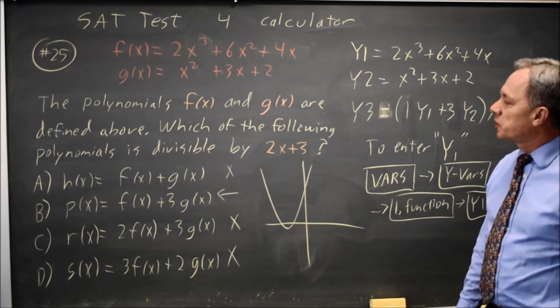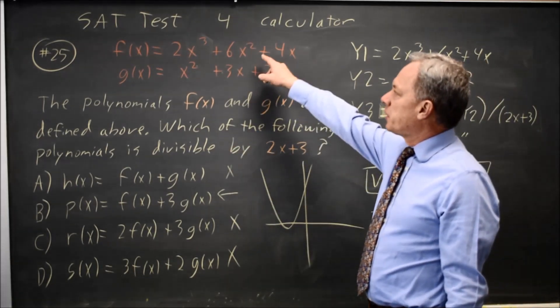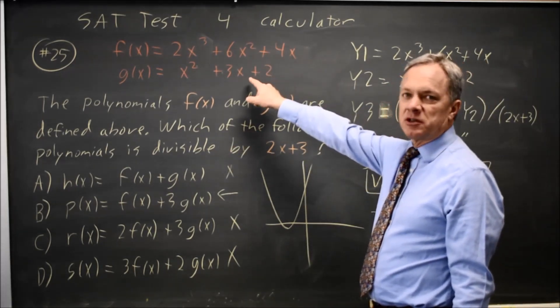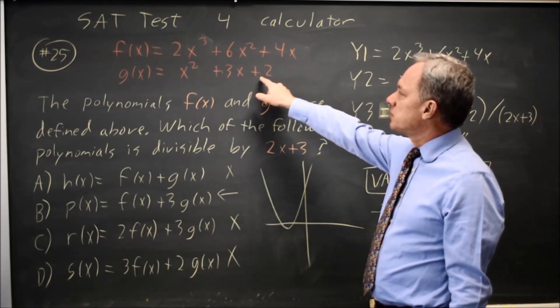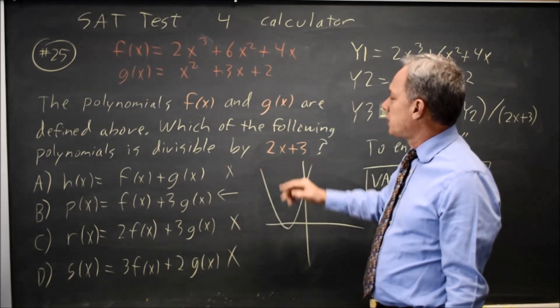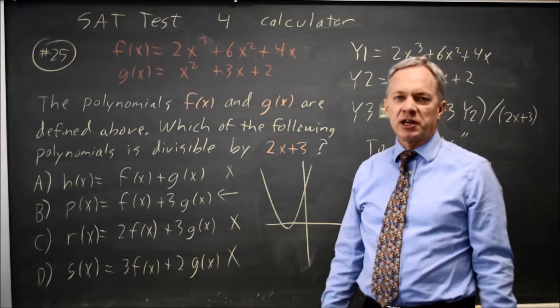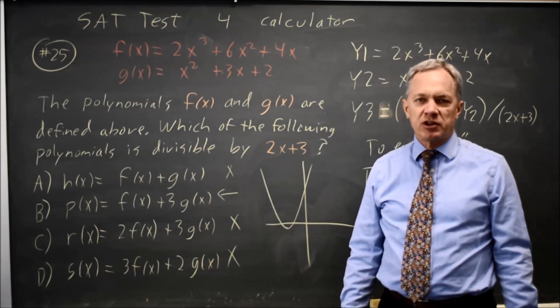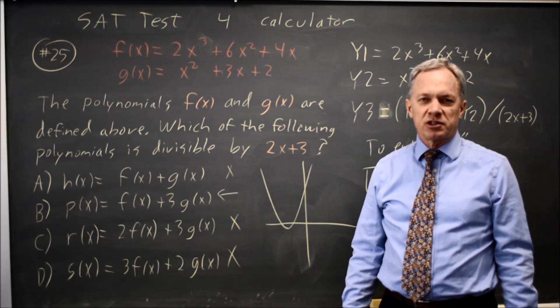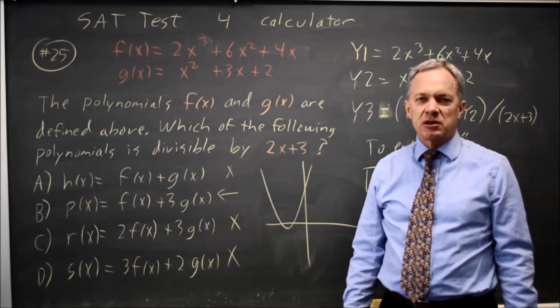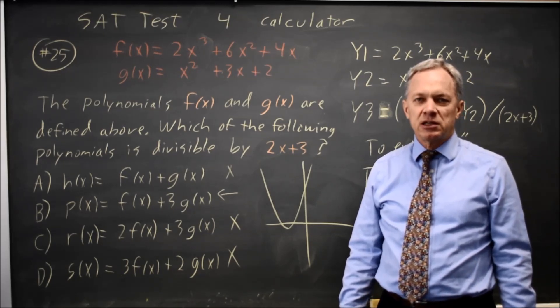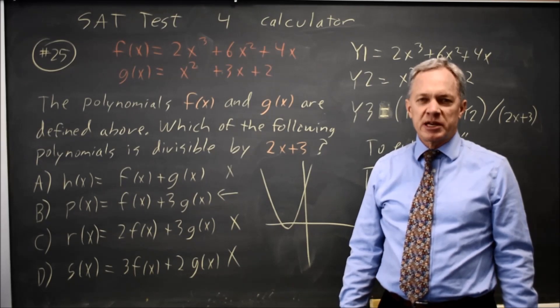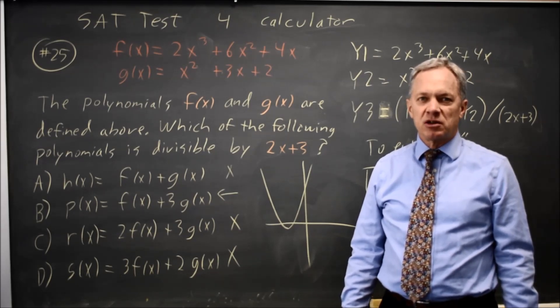So the bottom line is we want it evenly divisible. When we add a linear combination of these two polynomials, we end up with a cubic. If we divide a cubic by a linear expression, we should get a quadratic if it evenly divides. If not, we get a rational function, and the rational function will have an asymptote. That's how we know it didn't evenly divide. Come back soon to find the next math video.